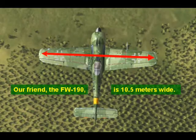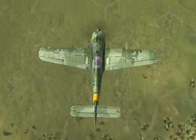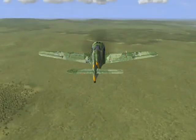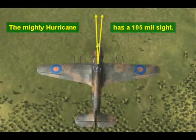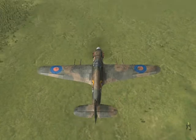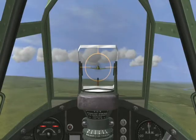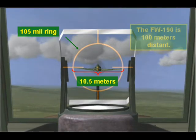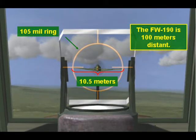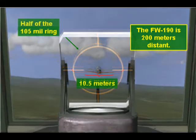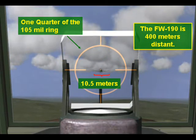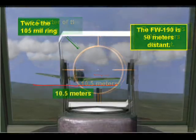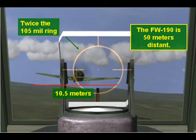Why is this important? Because our good friend the Focke-Wulf 190 is 10.5 meters wide. That's not real important to the driver of that FW-190 out looking around, but it's of vital importance to the Hurricane behind him, because that Hurricane has a 105-mil sight. As he saddles up behind that 190 and looks through, when the wingtips touch the sides of that circle, he's at 100 meters. When the target is half the size of the ring, he's at 200 meters. A quarter of the ring means 400 meters. Twice the size of the ring means 50 meters — right on top of him.